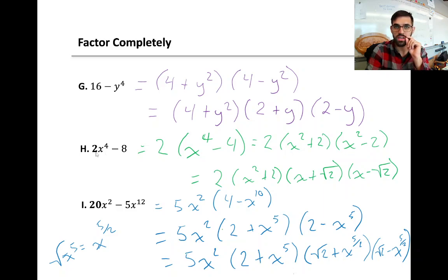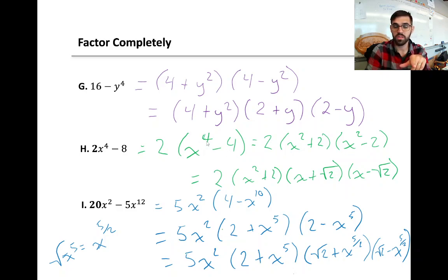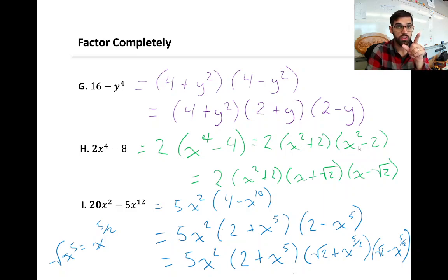For example h, we could factor this as a difference of squares, but first I notice that both terms can be divided by 2. So I'm going to factor out the greatest common factor of 2 first. That leaves x to the power of 4 minus 4 — an easier difference of squares to factor. Now we find the difference of squares for x to the power of 4 minus 4: a value is x squared and b value is 2, giving us x squared plus 2 times x squared minus 2. So we have 2 times x squared plus 2 times x squared minus 2. Now, x squared minus 2 technically looks like a difference of squares, and you're right — we could factor it.